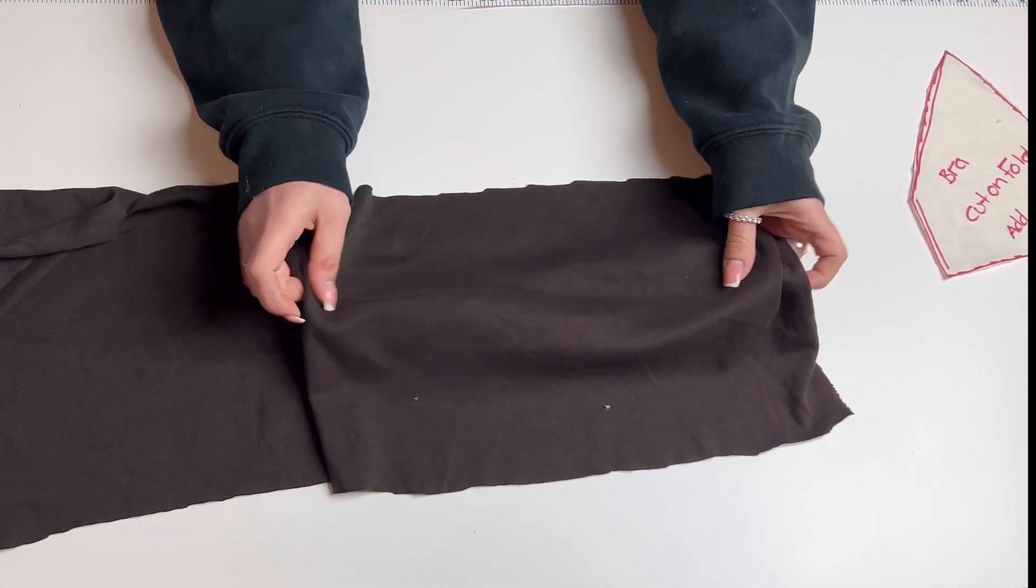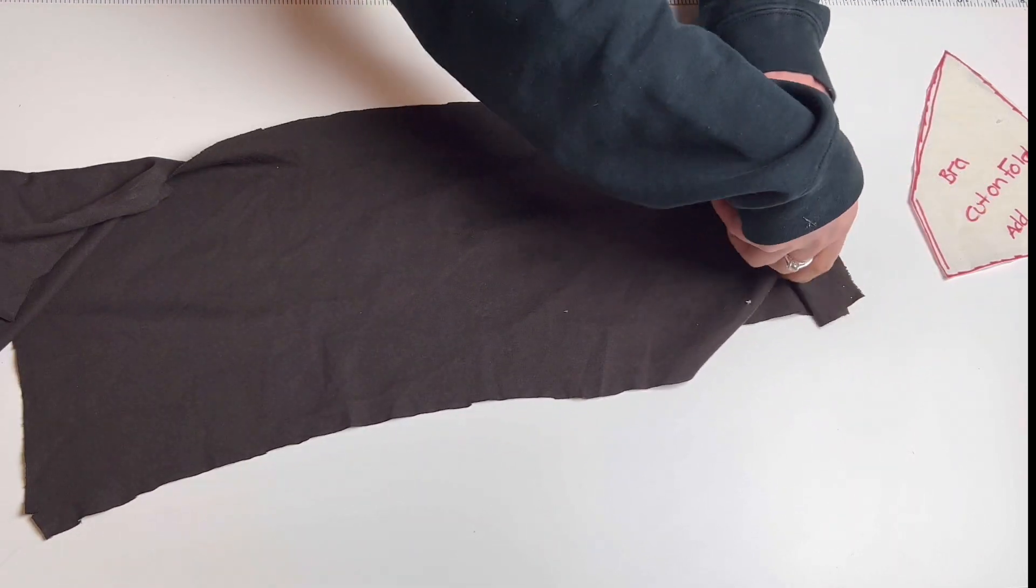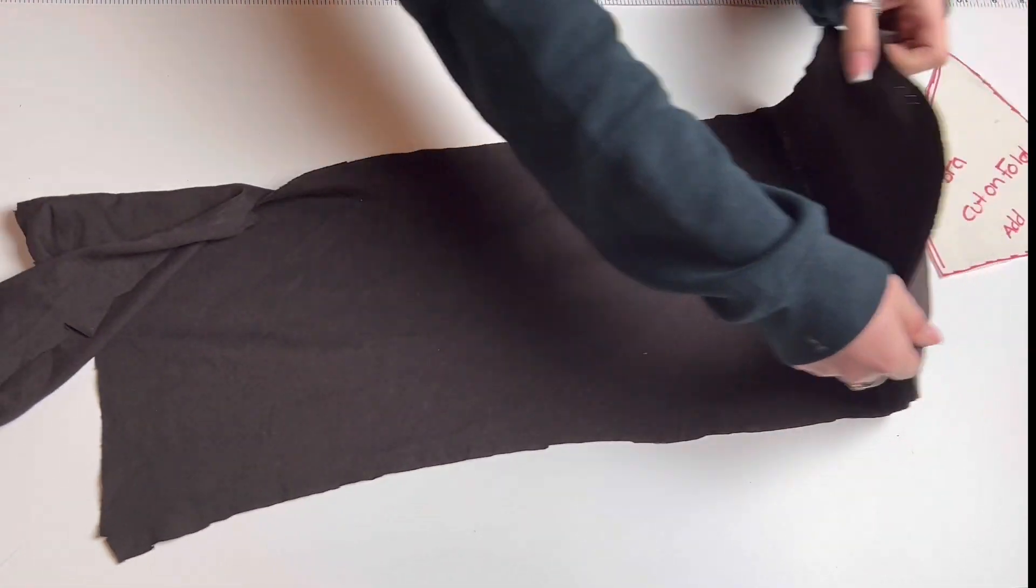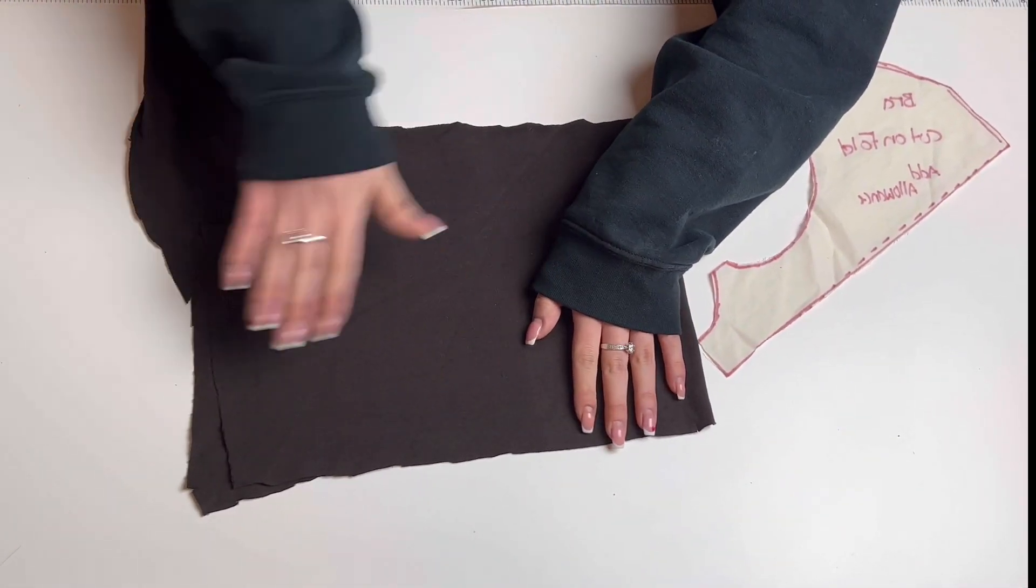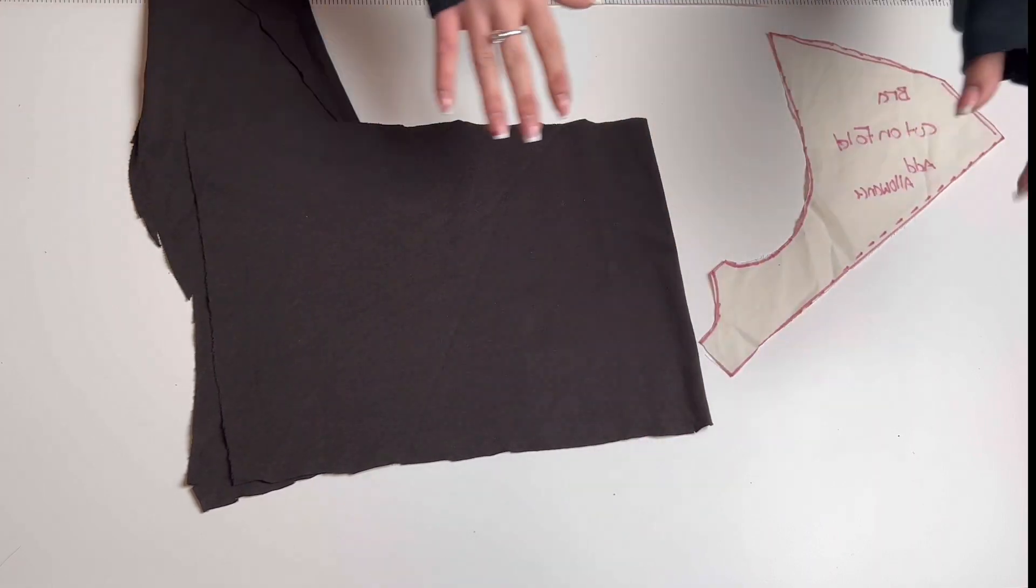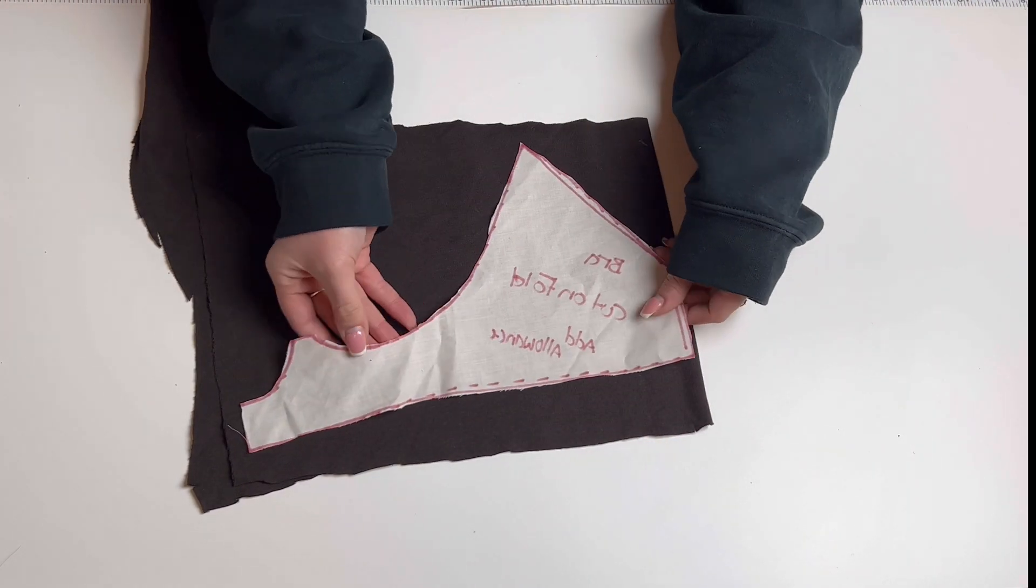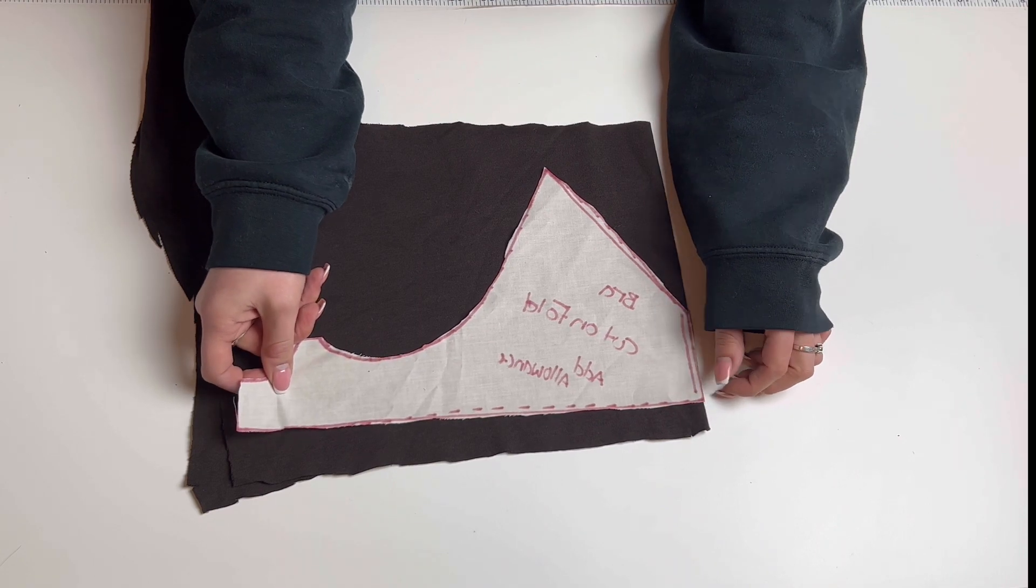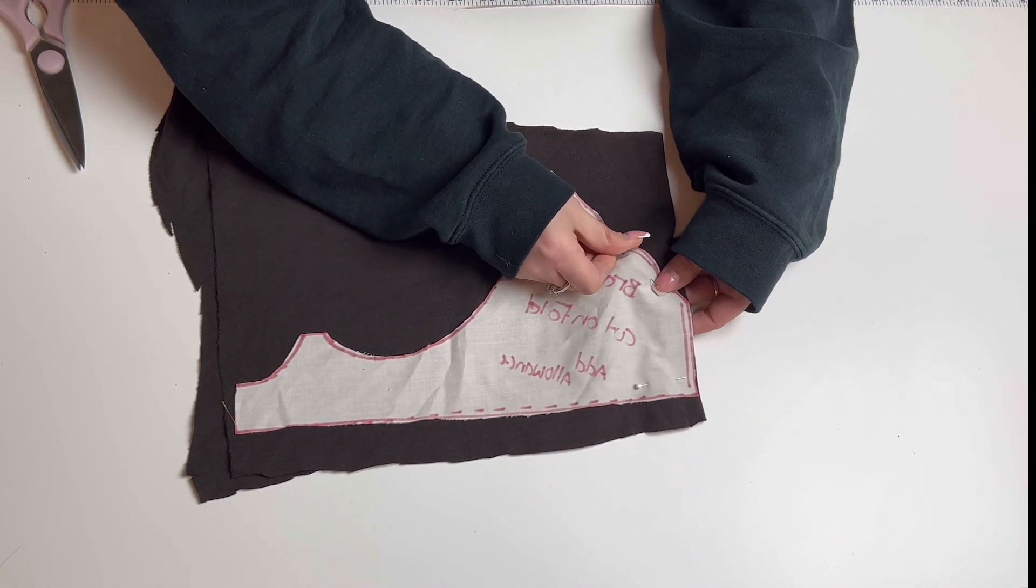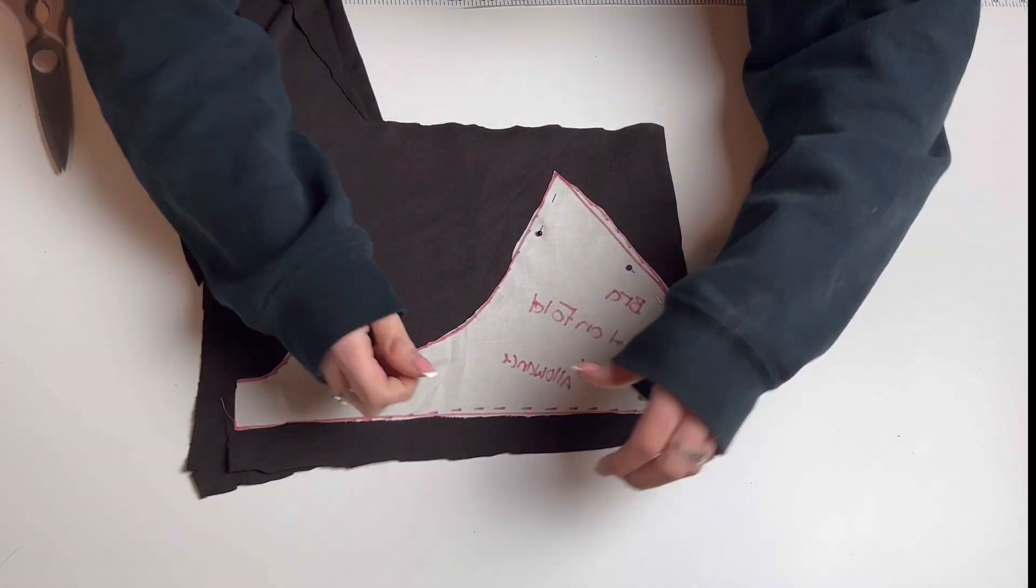Starting with the bralette, you want to make sure that if your bralette was made out of stretchy fabric, you also need to make your bralette out of stretchy fabric. So here I'm just folding my fabric in half. Make sure the fold of your fabric matches the fold on your pattern. Once your pattern is nice and flat, you can go ahead and start pinning it together so it's easier to cut. Make sure to add your seam allowance.